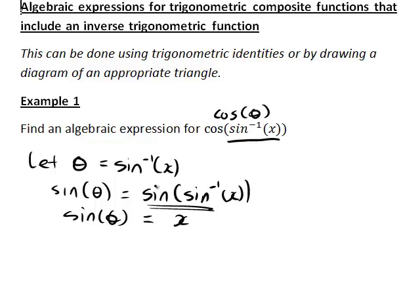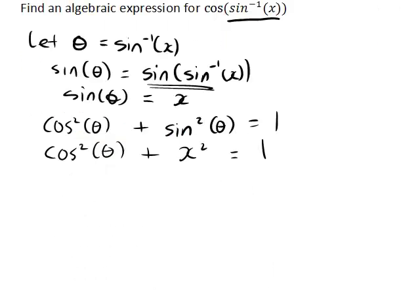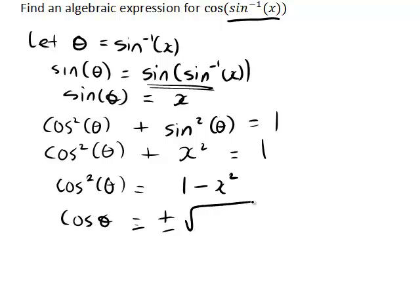Using a trigonometric identity, we ask: what identity relates sine theta and cos theta? The identity cos²θ + sin²θ = 1 directly relates those quantities, which is good because cos theta is what we want and sine theta is in terms of x. So that becomes cos²θ + x² = 1, which rearranges to cos²θ = 1 − x², suggesting cos theta equals plus or minus the square root of 1 minus x squared.